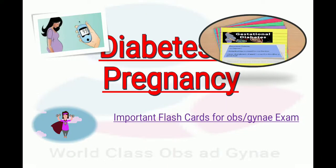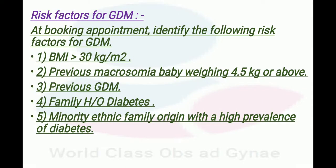Today we will discuss important flashcards on the topic of diabetes in pregnancy, because if we remember these flashcards then almost all exam questions related to this topic are easily solved. The first flashcard covers risk factors for diabetes mellitus. At the booking appointment, we identify risk factors including: BMI more than 30 kg/m², previous macrosomic baby weighing 4.5 kg or above, previous GDM, family history of diabetes, and minority ethnic family origin with a high prevalence of diabetes.